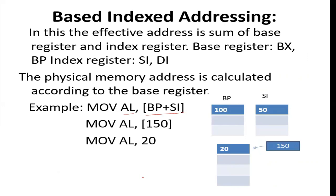Next is based index addressing mode. In this mode, the effective address is the sum of the base register and the index register. Unlike index addressing mode where we added a displacement value to the index register, here we perform addition on the register contents themselves. BP is the base register and SI is the index register. We add their contents to get the effective address — for example 150 — and at memory location 150 we get the value 20. So the final instruction becomes 'MOV AL, 20.'